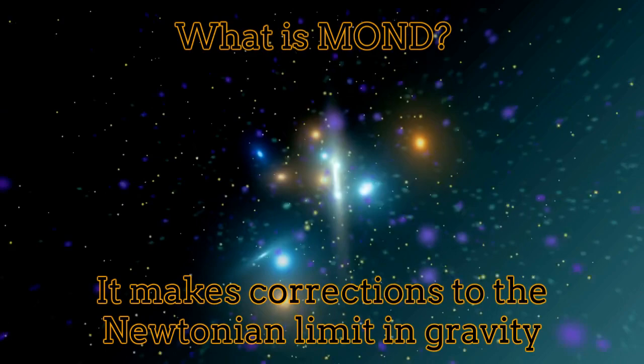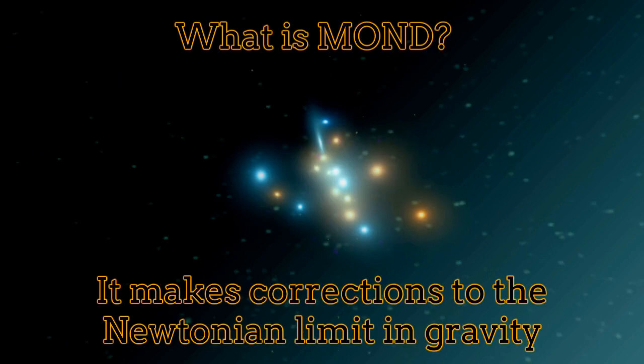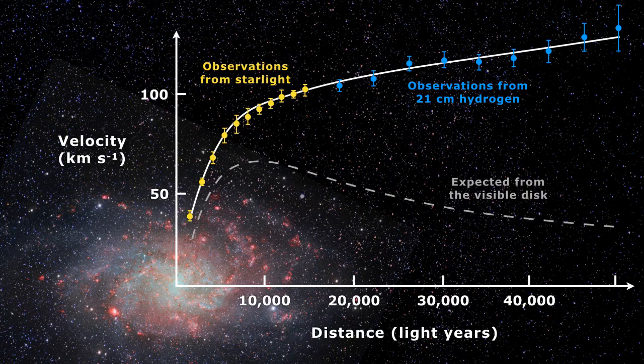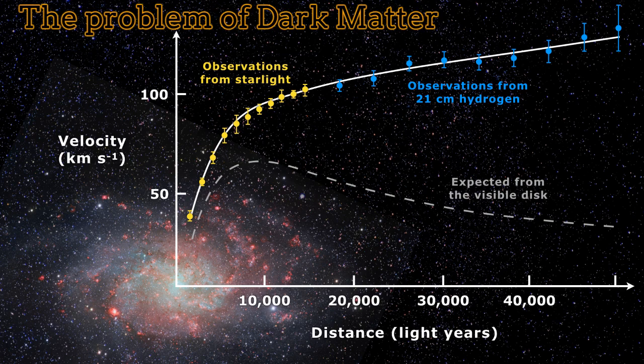First of all we have to mention what MOND is. MOND is a theory which corrects the Newtonian limit of gravity. The problem with the Newtonian limit of gravity can be perceived at the scales of the galaxies.